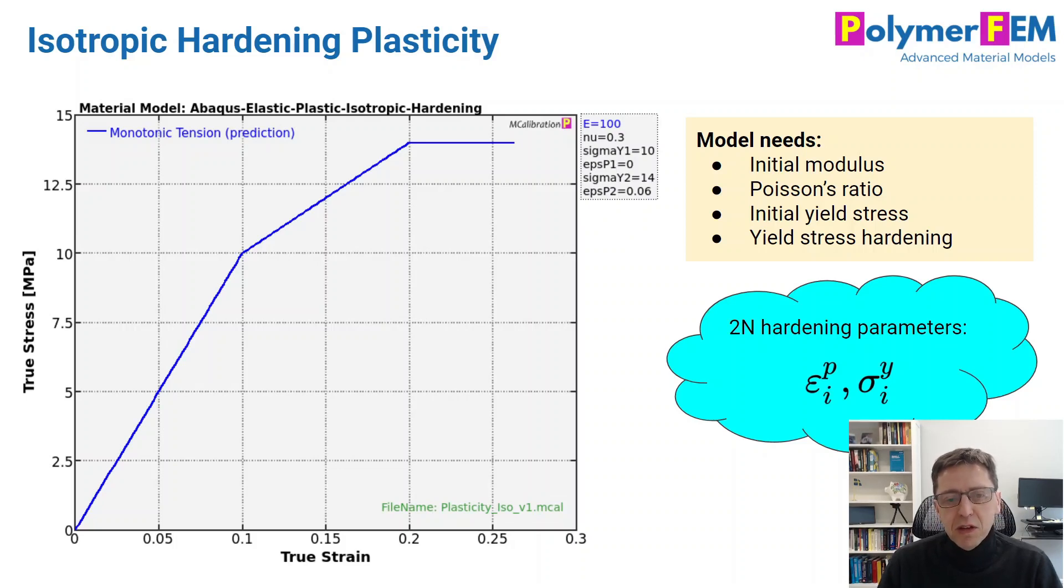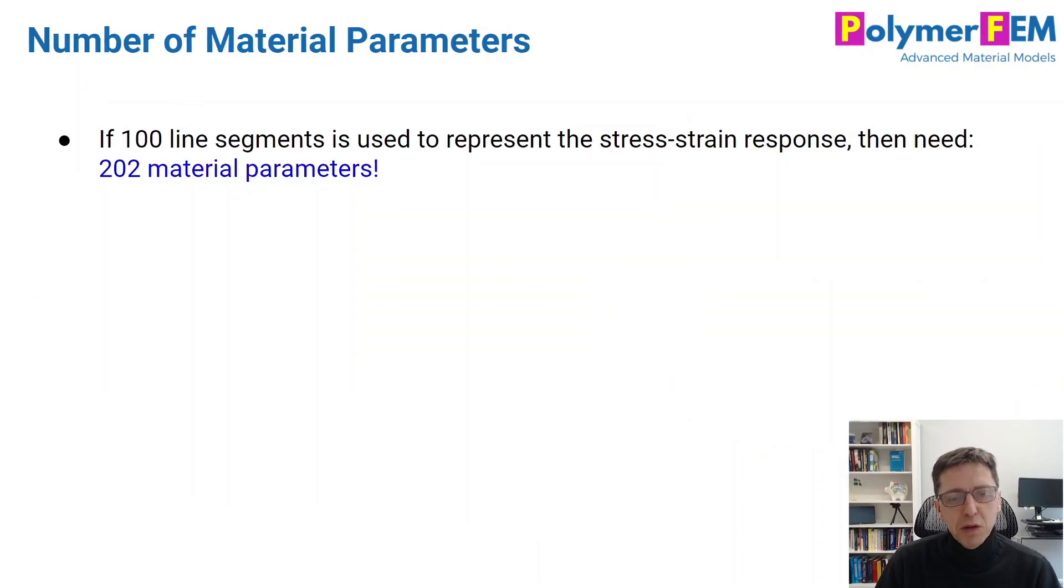So to specify this, in this model, we have a piecewise representation of the stress-strain response beyond yielding. So we would have pairs of plastic strain and yield stress values, and we can have n number of those. In my example here, n is equal to 1, but you can certainly have very large number of little segments to represent a true stress-strain curve that you measure experimentally. So that's how this model works, and how we can understand what the parameters are.